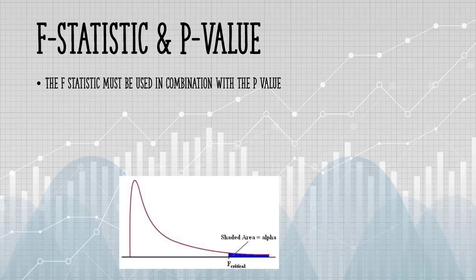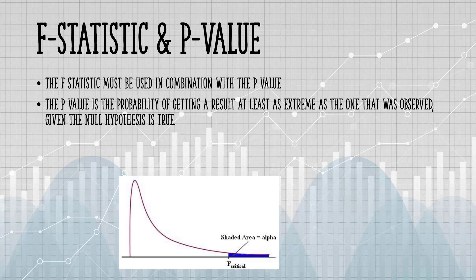The P-value is determined by the F-statistic and is the probability your results could have happened by chance. The P-value is the probability of getting a result at least as extreme as the one that was observed given the null hypothesis is true.